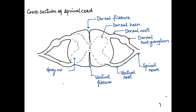Next, let's label the inner part — the H-shaped region — which is the gray matter of the spinal cord. The inside of the spinal cord has gray matter and the outer side has white matter. The white matter is divided into four columns: the dorsal, ventral, and the lateral parts.